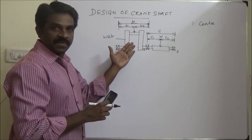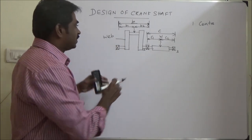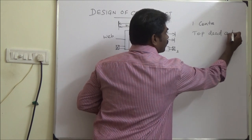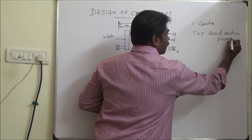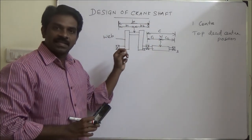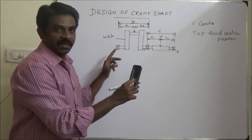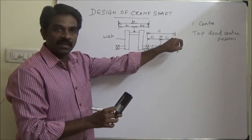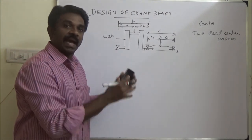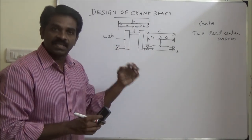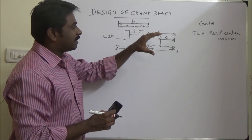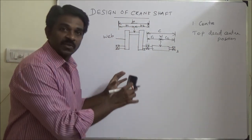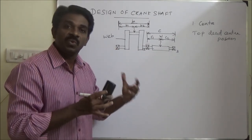If you see the crankshaft in this position, this is called the top dead center position. In this position, the crankshaft is only subjected to bending moment. At some other angle, it will have a maximum twisting moment, so we can design based on that twisting moment as well. In this discussion, we will first look at the bending moment when the crank position is at top dead center. In this position, only bending moment is acting — that means there is no twisting moment.